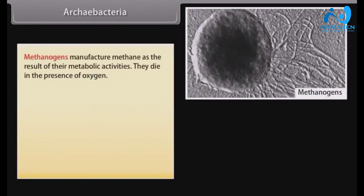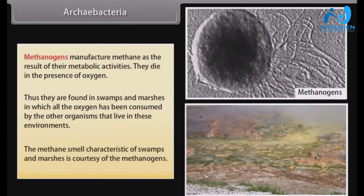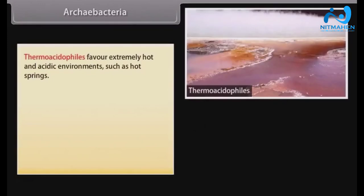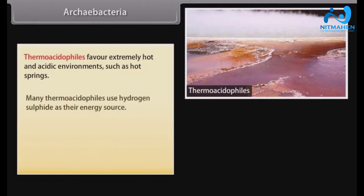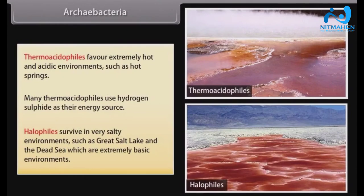Methanogens manufacture methane as the result of their metabolic activities. They die in the presence of oxygen and are thus found in swamps and marshes where all oxygen has been consumed by other organisms. The methane smell characteristic of swamps and marshes is courtesy of the methanogens. Thermoacidophiles favor extremely hot and acidic environments such as hot springs, and many use hydrogen sulfide as their energy source. Halophiles survive in very salty environments such as the Great Salt Lake and the Dead Sea, which are extremely basic environments.